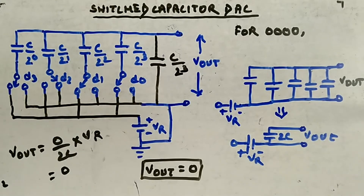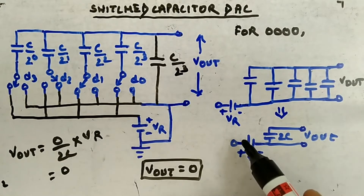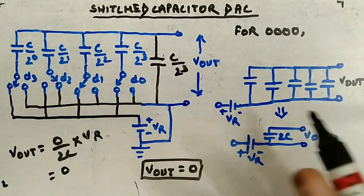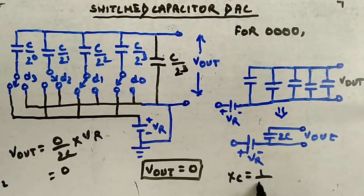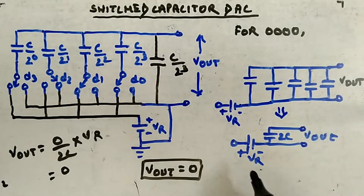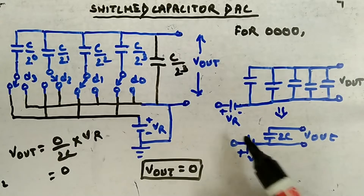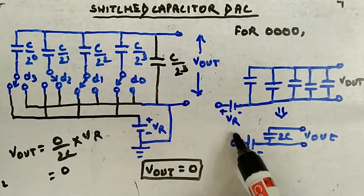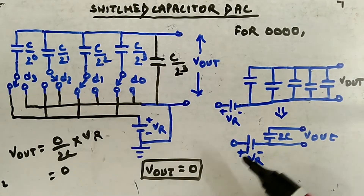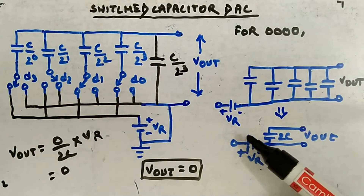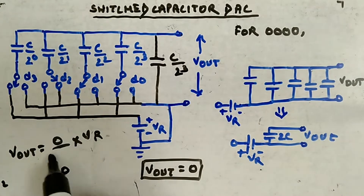Since there is no capacitance connected to Vr on the positive side, that equivalent capacitance is 0. Using the formula, Vout equals 0 divided by (0 + 2C) into Vr, which gives 0. You can think of it as: if capacitance is 0, reactance XC = 1/(ωC) becomes infinite. So Vout is equal to 0 — that is one case.